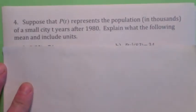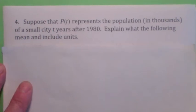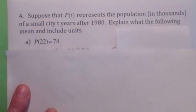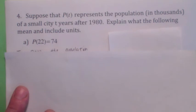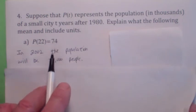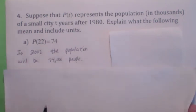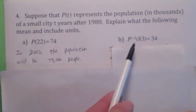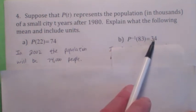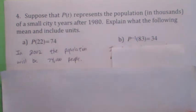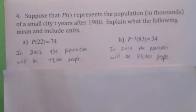Suppose p(t) represents the population in thousands of a small city t years after 1980. What does p(22) = 74 mean? t = 22 means the year 2002, and 74 means 74,000 people. So in 2002, the population will be 74,000. What does p inverse of 83 equals 34 mean? p inverse gives the year: 1980 + 34 = 2014. So in 2014, the population will be 83,000 people.